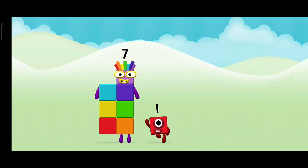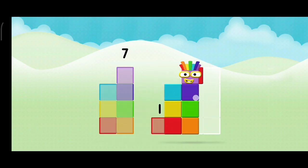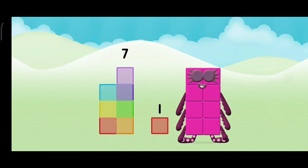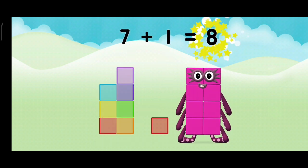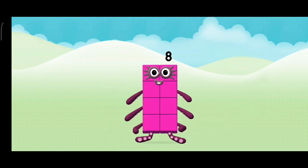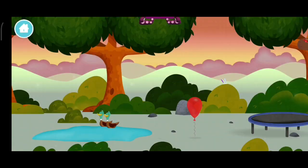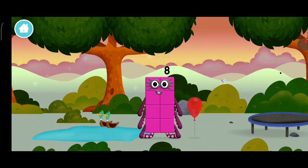That's the correct answer. Now add the number blocks together. One. Seven. Seven plus one equals eight. Amazing! You made a new number block.